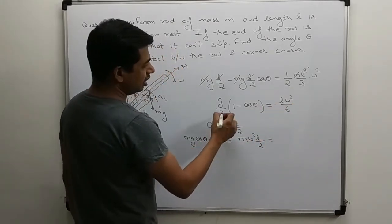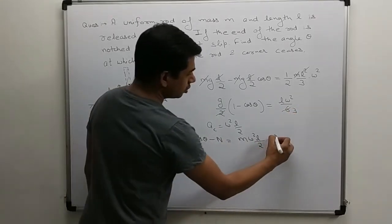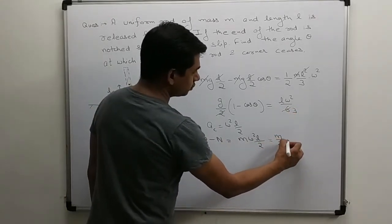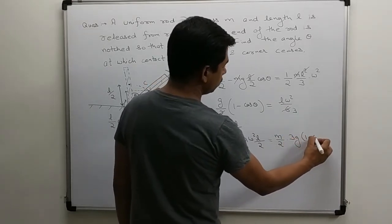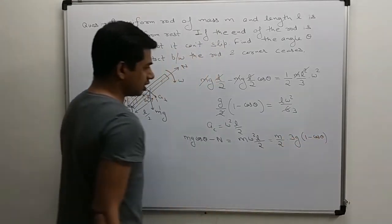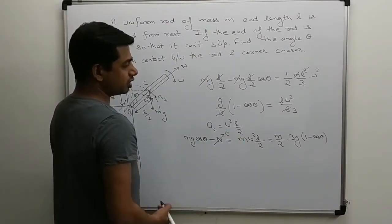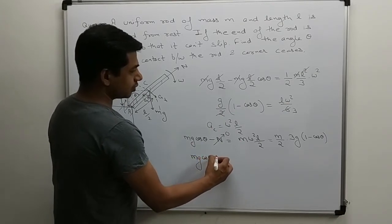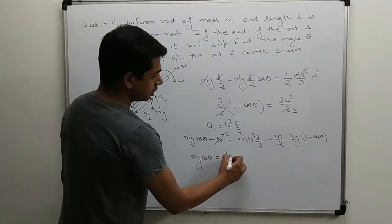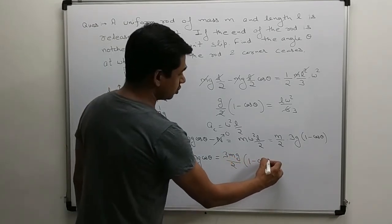Omega square l value can be substituted from here. This 2 gets canceled. M by 2. Omega square l which is 3g into 1 minus cos theta. And we want normal to be zero, so make normal zero. So mg cos theta equals 3 mg by 2 into 1 minus cos theta.